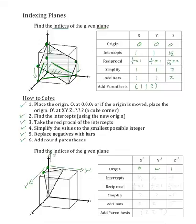Now the next step in solving for this plane is to find the intercepts. Starting at our new origin, we will travel along the x-prime axis until the plane intercepts it, which occurs right here at ½. Then we will go back to our new origin and travel along the y-prime axis until the plane intercepts it, which happens right here at ½. Finally, we will go back to our new origin and travel along the z-axis until the plane intercepts it, which will happen right down here at –1.